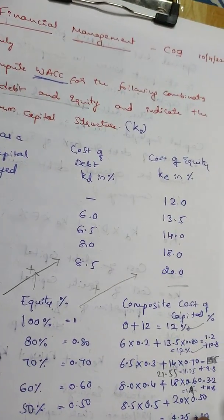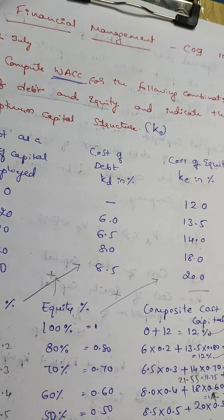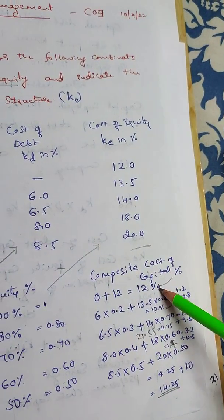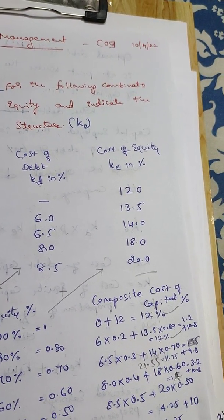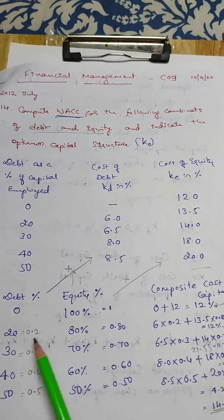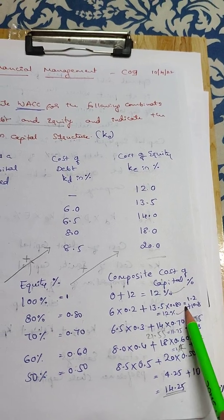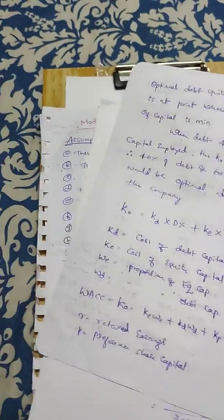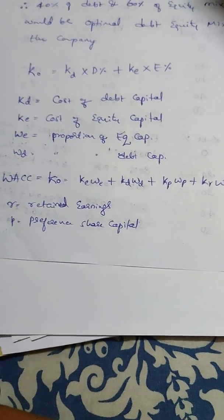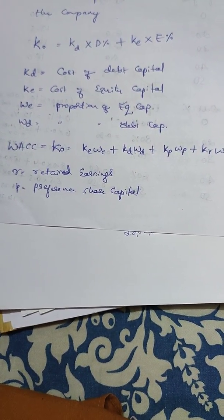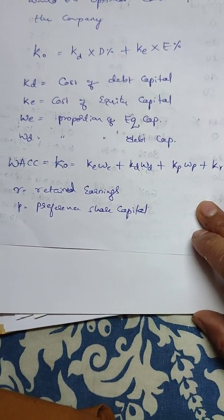So based on this, the first two combinations — 0% debt with 100% equity and 20% debt with 80% equity — do not give the optimum capital structure. The optimum capital structure is at 30% debt and 70% equity with a minimum WACC of 11.75%. If there are any corrections, please comment below. Thank you.